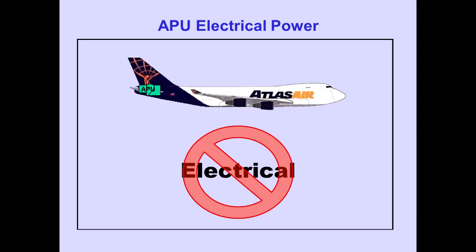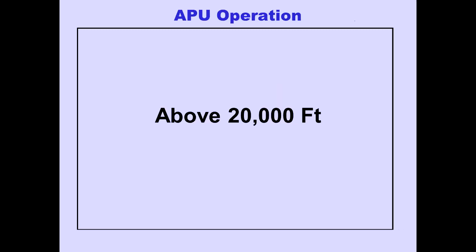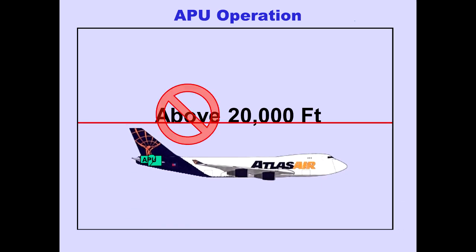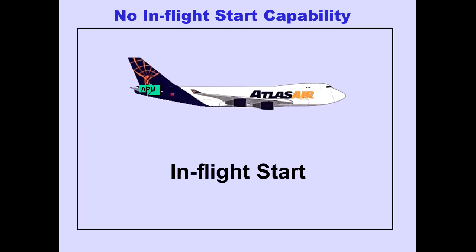APU electrical power is not available in flight. The APU is not certified for operation above 20,000 feet. The APU cannot be started in flight.